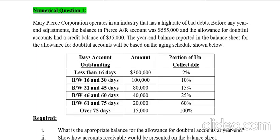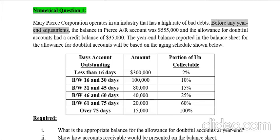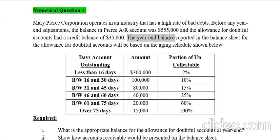This is Osman Ali and we'll do a numerical on the aging schedule learned in the previous video. There is a corporation in an industry that has a high rate of bad debts. Before the year-end adjustment — adjusting entries done at the end of every year to find updated values of certain balance sheet elements — the company's accounts receivable balance was $55,000 and the allowance for doubtful accounts had a credit balance of $35,000.